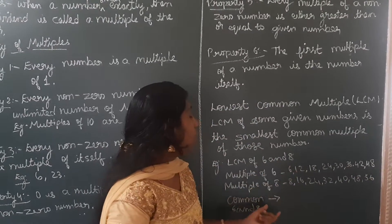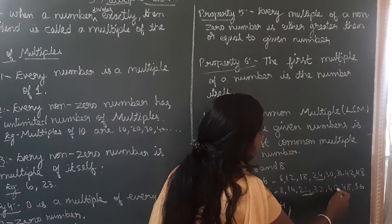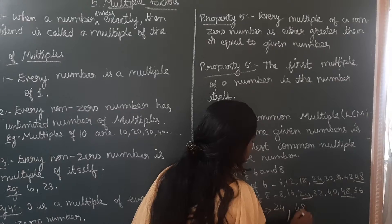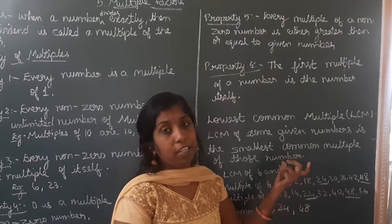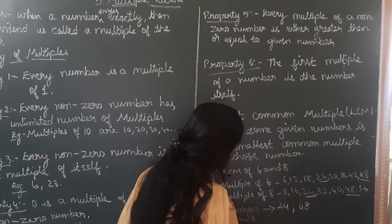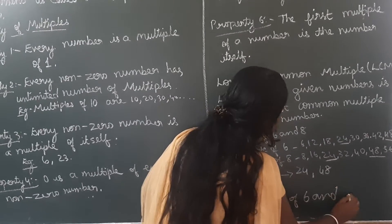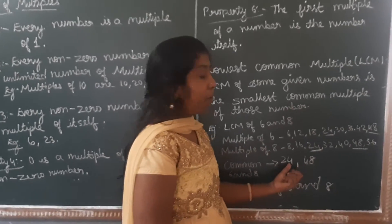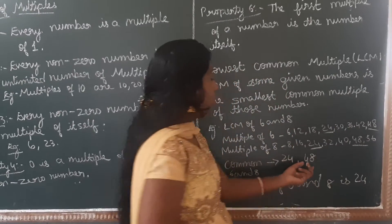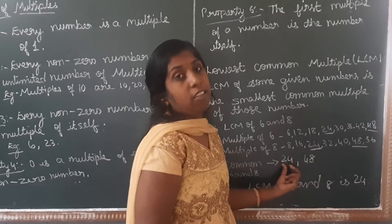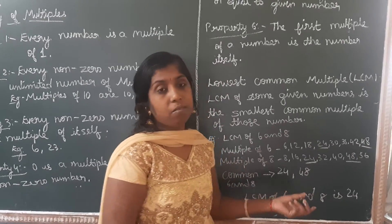In this, what are the common numbers? Here 24 is common — 24 appears in both lists. Next common number is 48. So we have to check the least. LCM means lowest common multiple. Which is the lower number — 24 and 48? The lesser number is 24. So LCM of 6 and 8 is 24. We have 48 as well, but we are finding the lowest common multiple, so 24 is the answer.